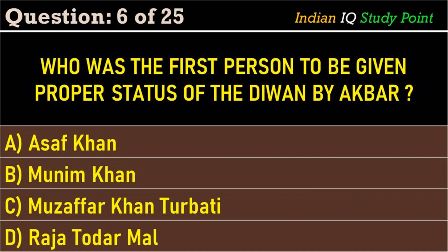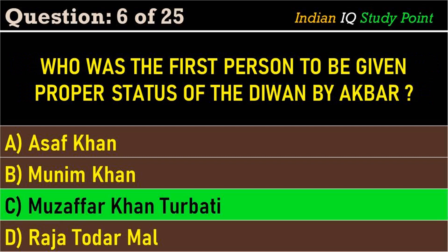Coming to the next question: who was the first person to be given the proper status of Diwan by Akbar? Option A. Asaf Khan, B. Munim Khan, C. Mujaffar Khan Turbati, D. Raja Todar Mal. And the correct answer is Option C. Mujaffar Khan Turbati.